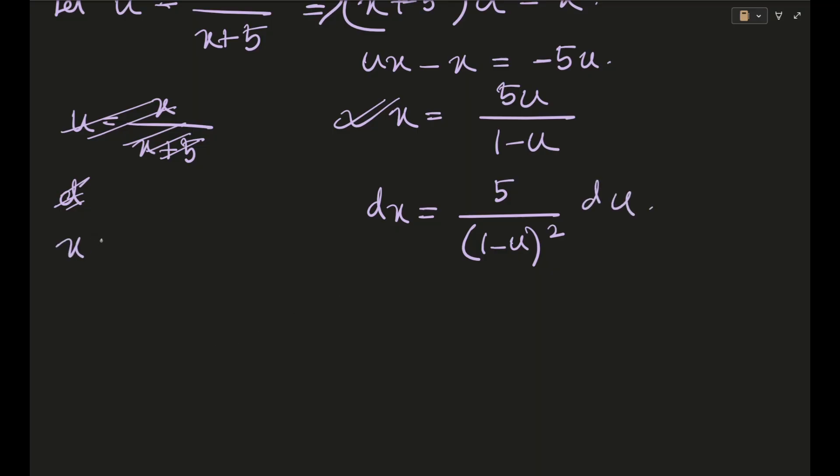And some things that we need to calculate. x+5 will be basically very easy. I guess 5/(1-u). And your 1-x will be 1 minus 5u/(1-u). So basically, this will come out to be I guess (1-u) minus 5u. So (1-6u)/(1-u).